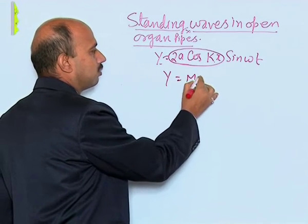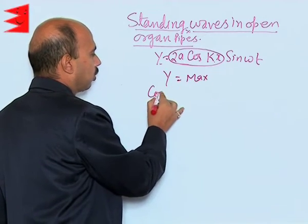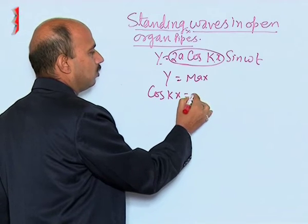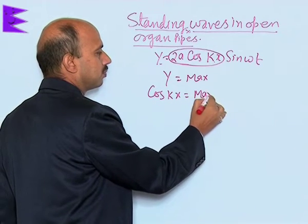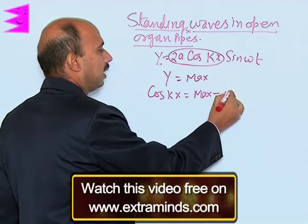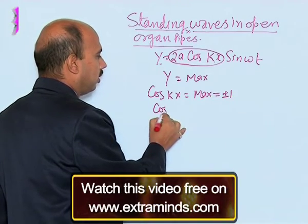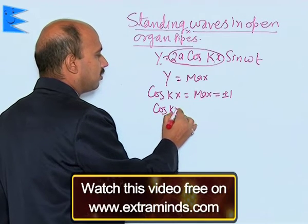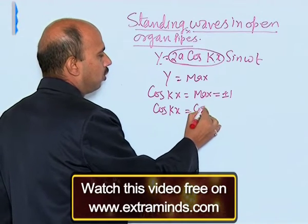We can write y is maximum when cos(kx) is maximum, which equals ±1. So cos(kx) equals cos(nπ), where n equals 0, 1, 2, 3, and so on.